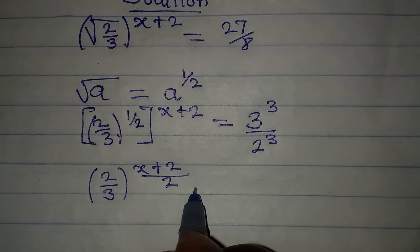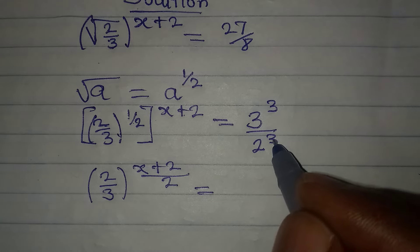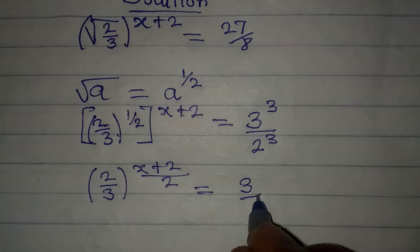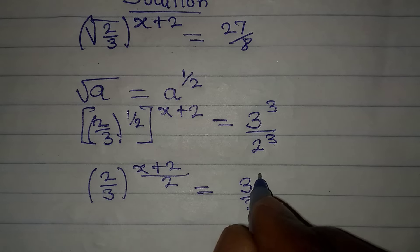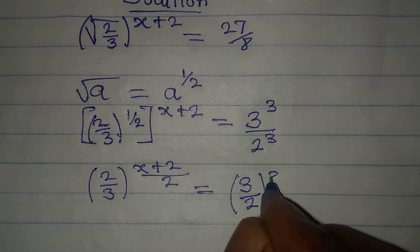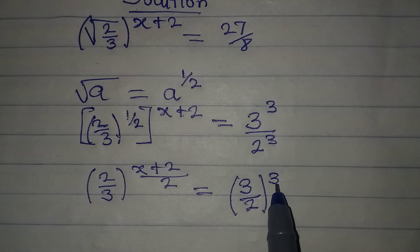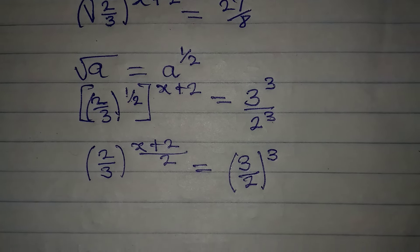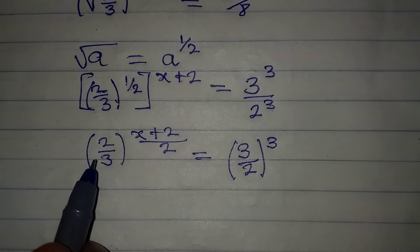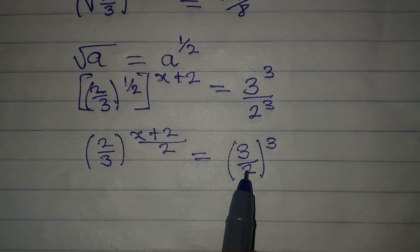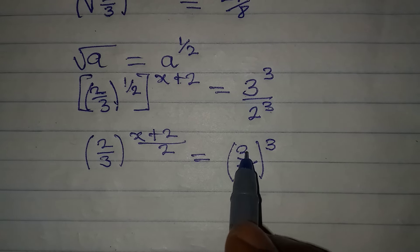This equals the right side, where both 3 and 2 share a power of 3, so I can write it as 3 over 2 to the power of 3. This means both sides are working with the power of 3. But now the issue is the base: left side is 2 over 3 and the right side is 3 over 2.